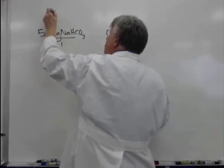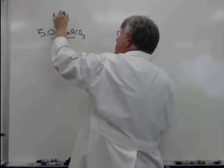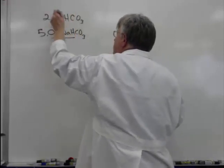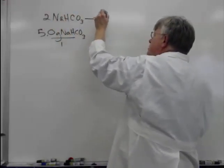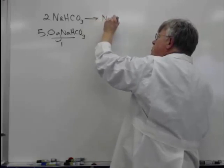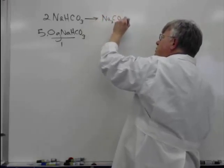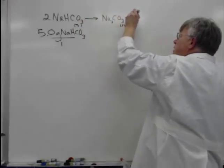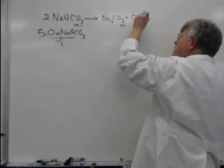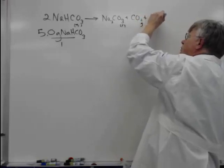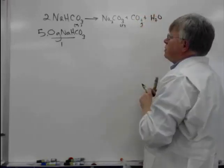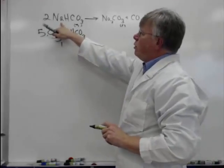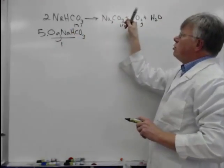The formula is: sodium hydrogen carbonate (baking soda) decomposes into sodium carbonate solid and CO₂ gas and water. This is a two-to-one ratio — two moles of baking soda are required to produce one mole of carbon dioxide gas.